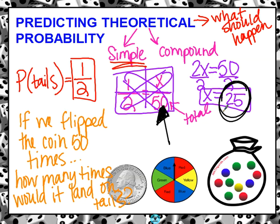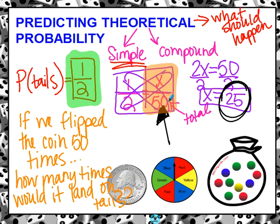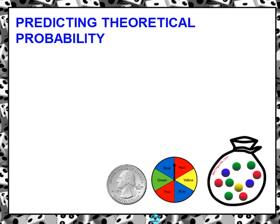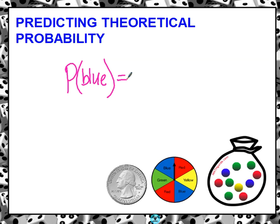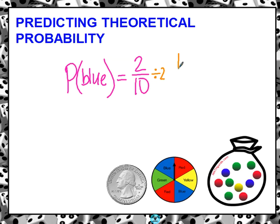We started with knowing that the probability was 1 out of 2, and we made a prediction that 1 out of 2 is some number out of 50 — just like a proportion. Now let's work with the bag of marbles. We want the probability of drawing a blue marble. There are 2 blue marbles out of 10 total. We can divide both by 2, so that gives us 1 out of 5. The probability of drawing a blue marble would be 1 out of 5.